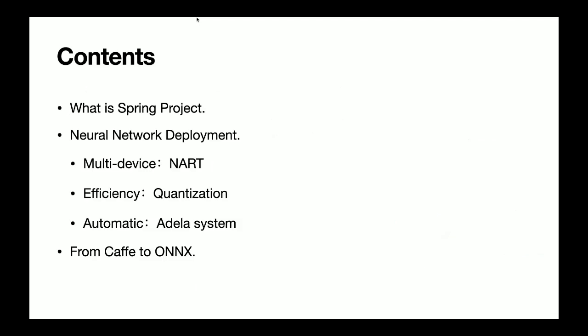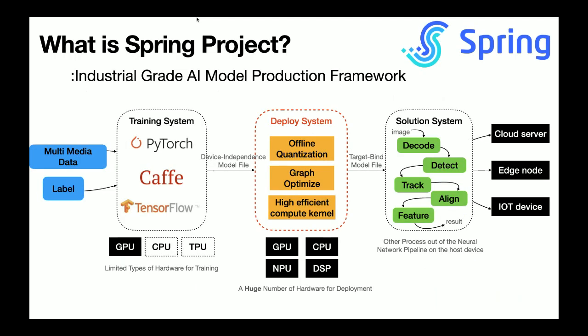My introduction will be divided into the following steps. The production process of an industrial deep learning model is a long pipeline. The main goal of the Spring project is to build a set of tools and combination patterns from model training, model compression, and deployment to product solution, so as to reduce the labor and time cost of model production.